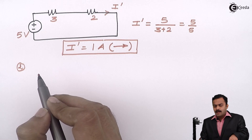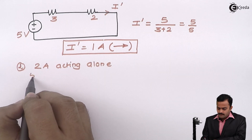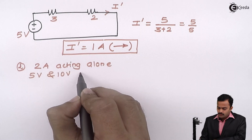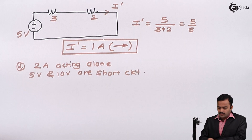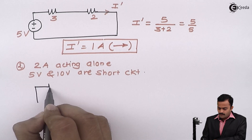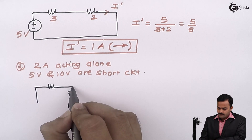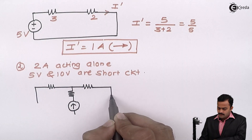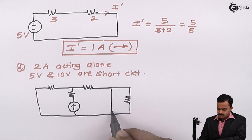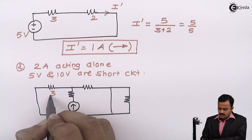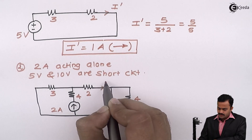In step two, I will consider 2 ampere acting alone. There are two voltage sources — 5 volt and 10 volt — and I need to short circuit both of them. So 5 volt and 10 volt are short circuited. The circuit is redrawn: 5 volt is shorted, 3 ohm remains as is, 4 ohm comes in series with the current source, then 2 ohm resistance, 10 volt is short circuited, and the other 4 ohm is placed accordingly. We are supposed to find out this current, which is I double dash.